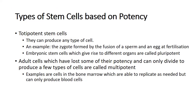Based on potency there are different types of stem cells. Totipotent stem cells can produce any type of cell at all — an example is the zygote formed by the fusion of a sperm and egg during fertilization. Embryonic stem cells, which give rise to different organs, are called pluripotent — they are also considered totipotent because they can divide into any type of cell. When a sperm fuses with an egg, the resulting embryo initially appears as just a tiny speck, but those stem cells begin to grow and divide to form different parts of the body.